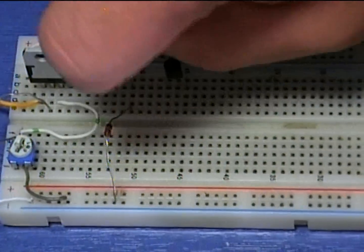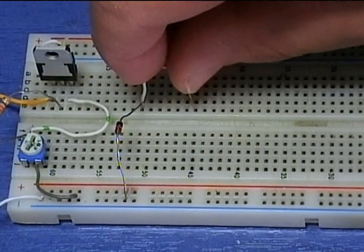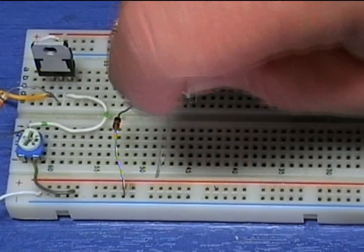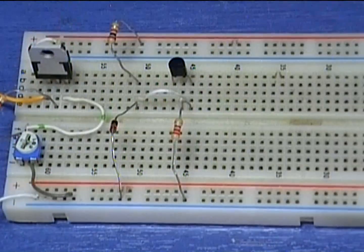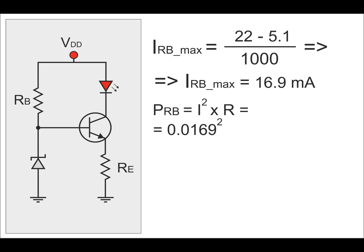It is important to calculate also the power that the base resistor and the Zener diode are called to dissipate at maximum supply voltage. The maximum current through the resistor can be calculated with Ohm's law. From the supply voltage, we subtract the Zener voltage, and then we divide this value by the resistor value. Now we can apply the formula I squared R to calculate the power dissipation on the resistor. The power dissipation on the resistor is 285.6 mW. Therefore, a 0.5 W resistor must be used.